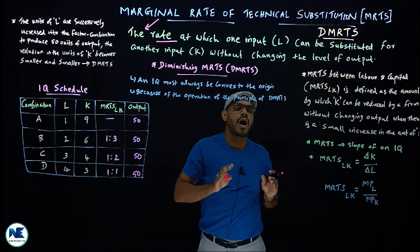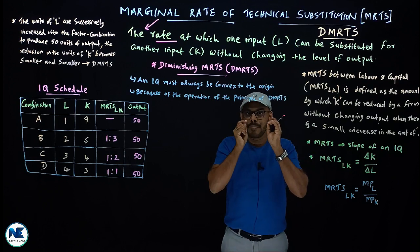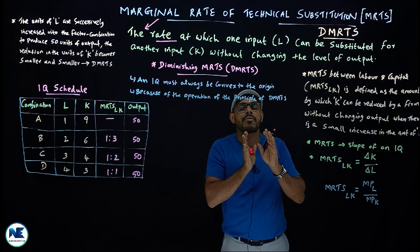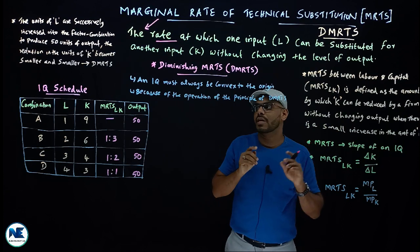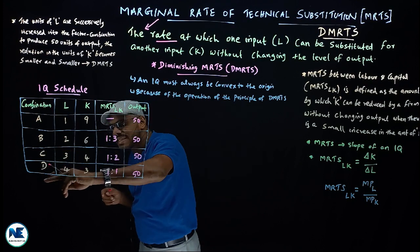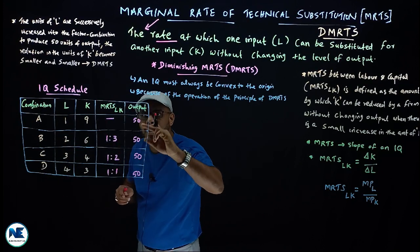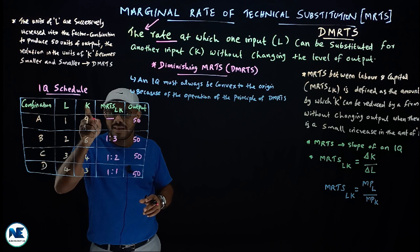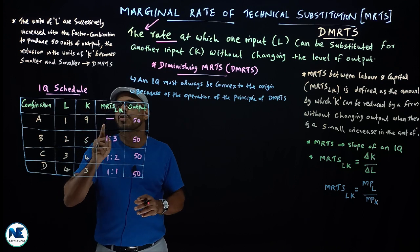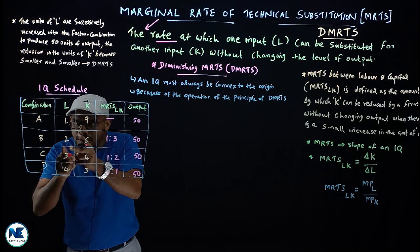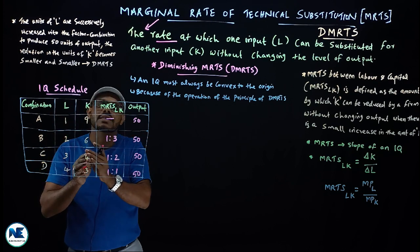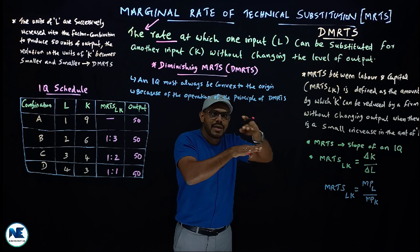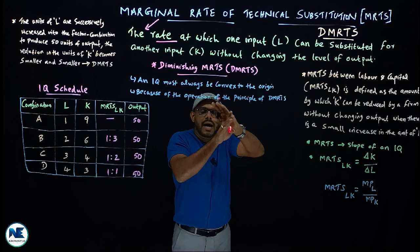The combination of factors on an isoquant produces the same level of output. For example, combinations A, B, C, D all produce 50 units of output. These are different combinations but we can see the same level of output with different capital and labor units.